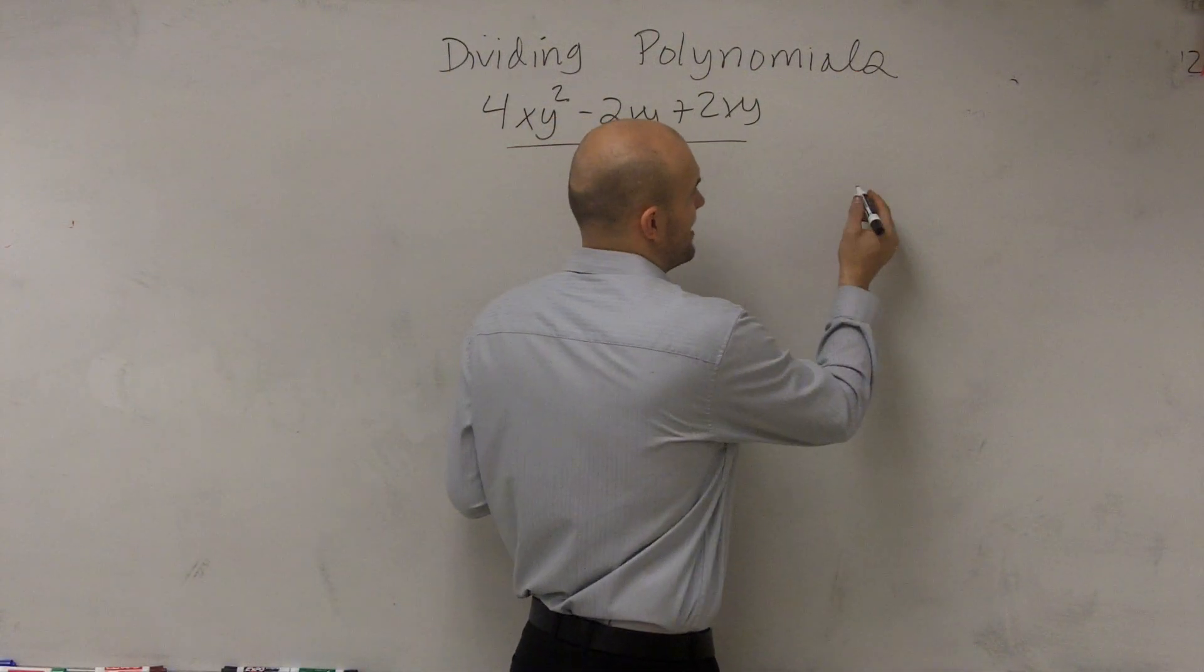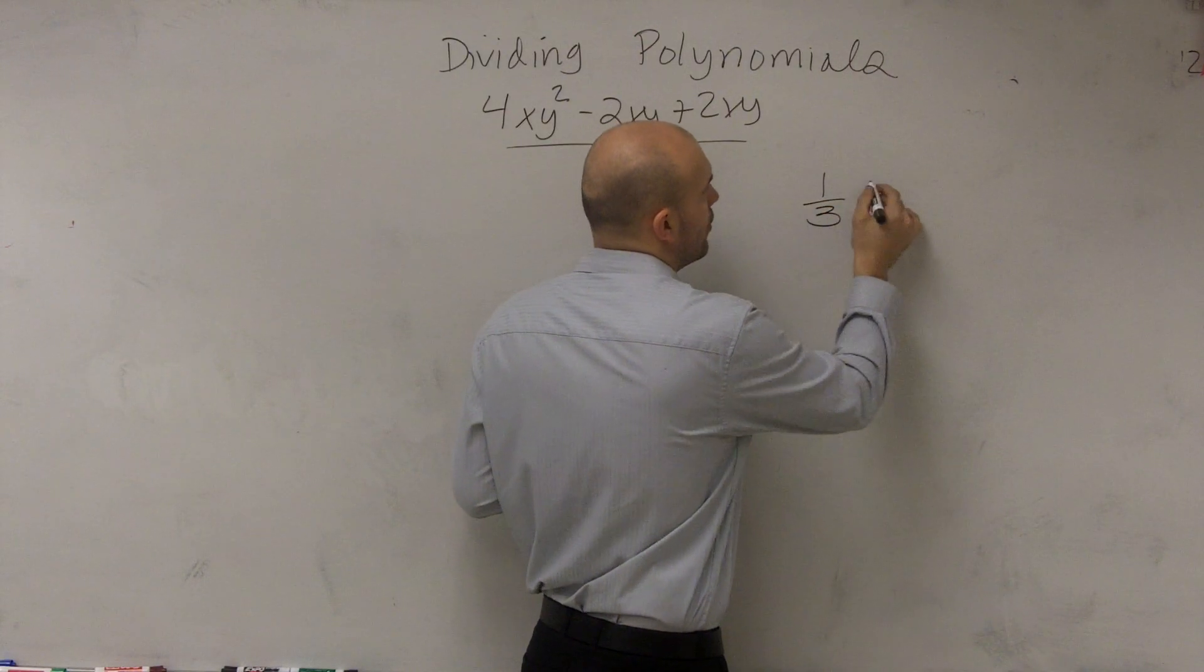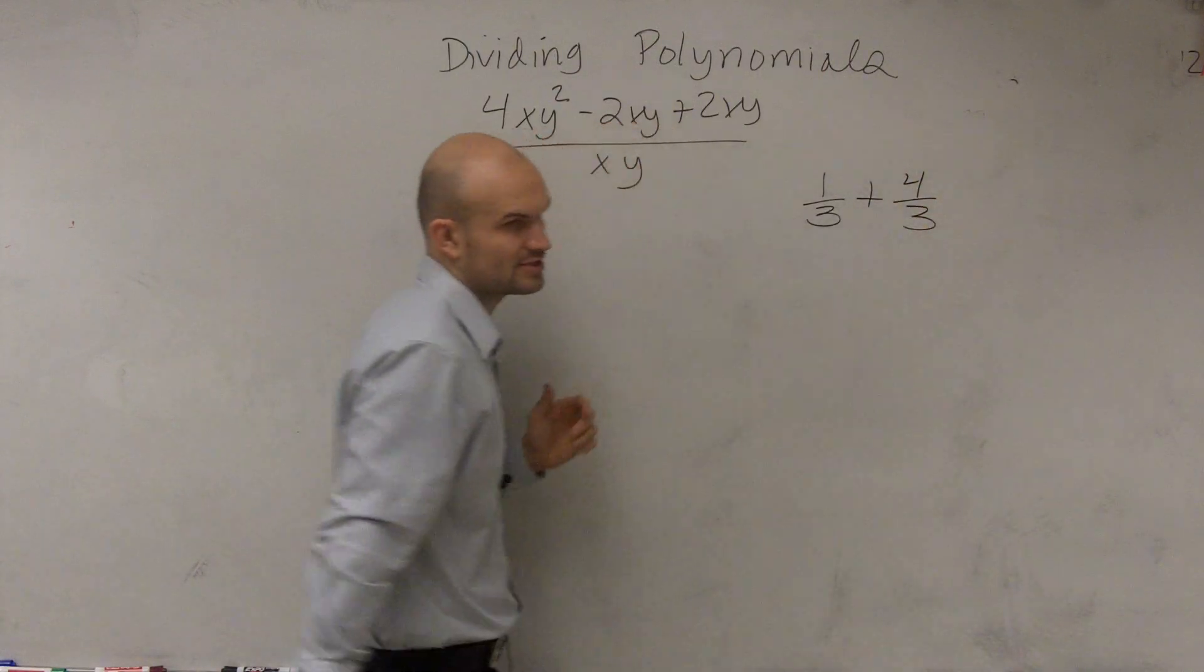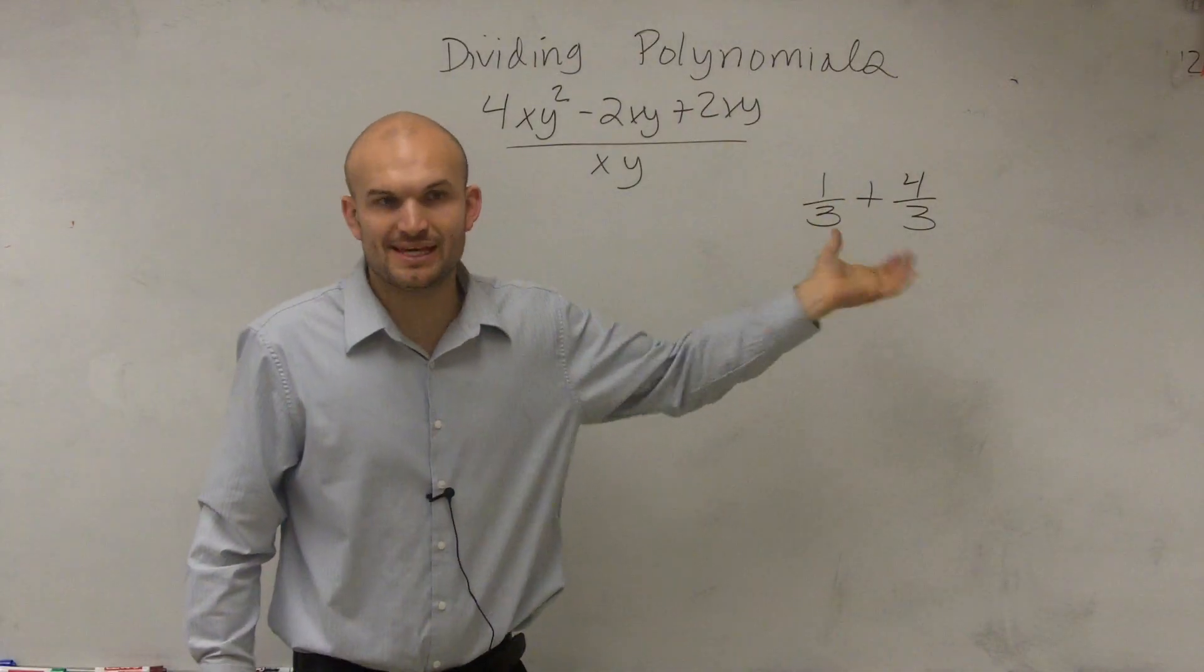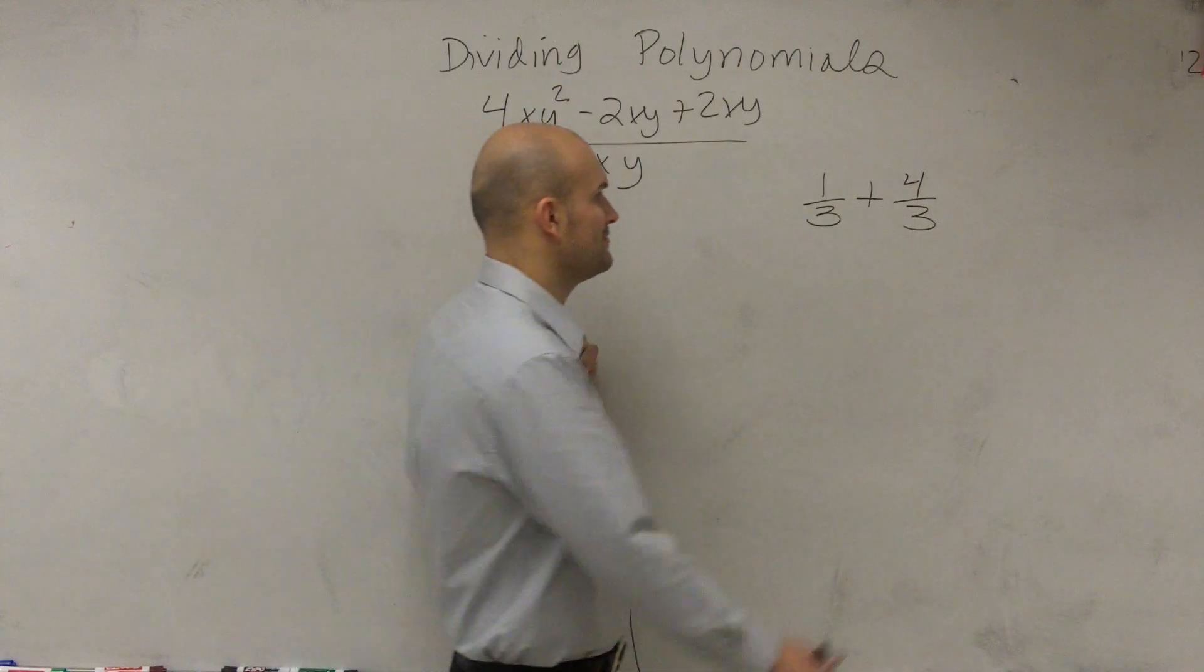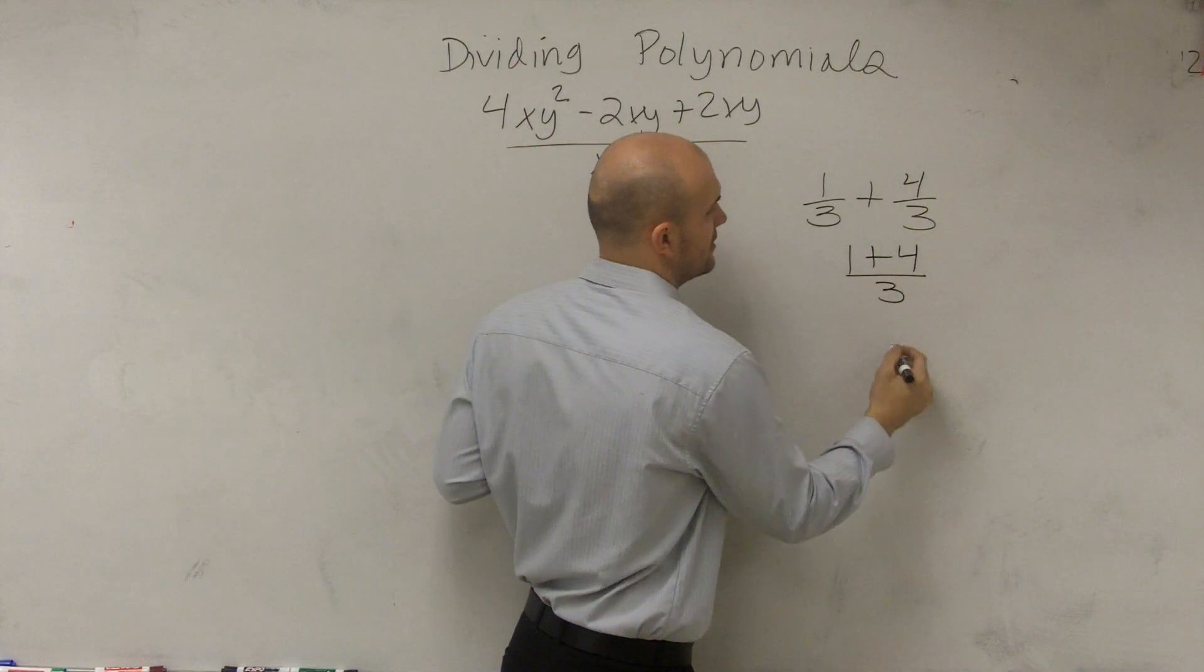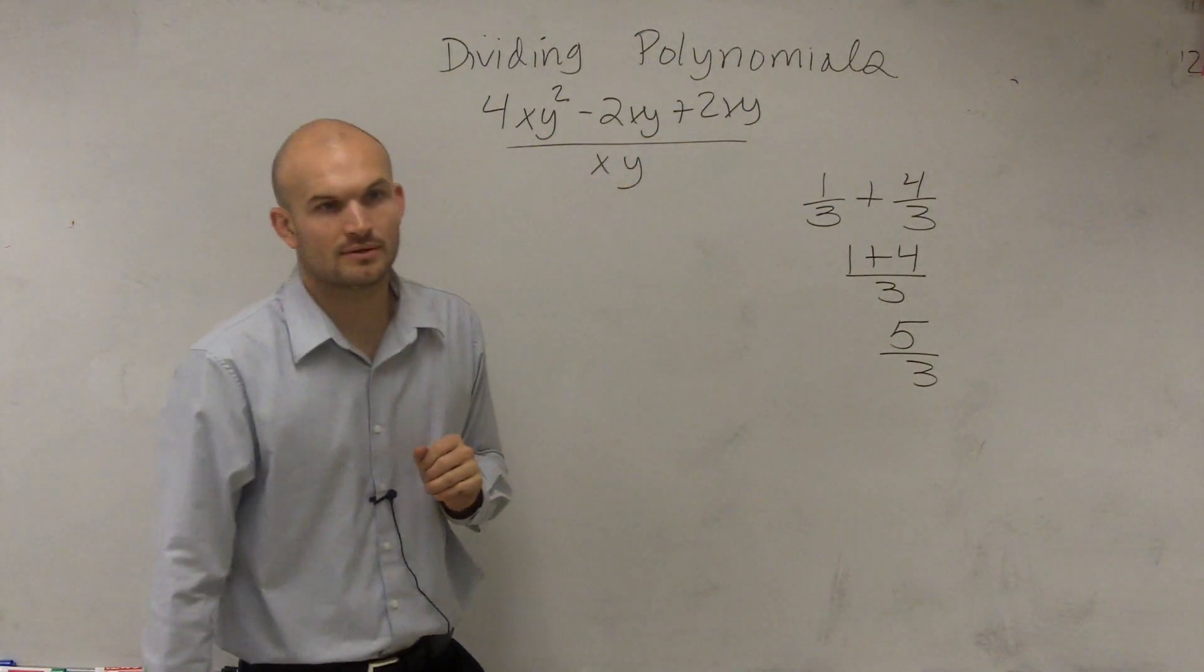If I was going to say 1/3 plus 4/3, when we add fractions, 1/3 plus 4/3, we keep the denominator the same, we just add the numerator, right? So we're left with 1 plus 4 over 3, which ends up giving us 5/3, correct?